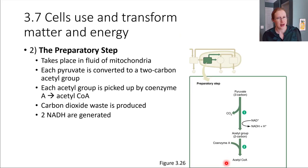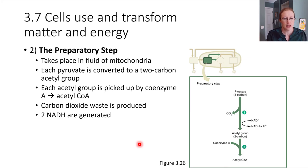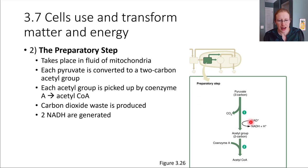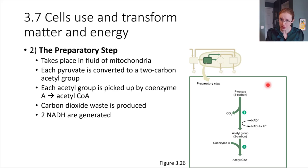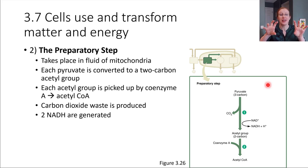The next step is called the preparatory step — getting the pyruvates ready for the next stage. This happens inside of the mitochondria, in the fluid of the mitochondria. Each pyruvate gets groomed: one carbon is snipped off of it, carbon leaves as CO₂, and the end result is a molecule that gets attached to coenzyme A, forming acetyl-CoA. This is a molecule with two carbons, ready to enter the next stage. We also make another molecule of NADH here. Remember, there are two molecules of pyruvate going through this, since we started with one glucose split in half.